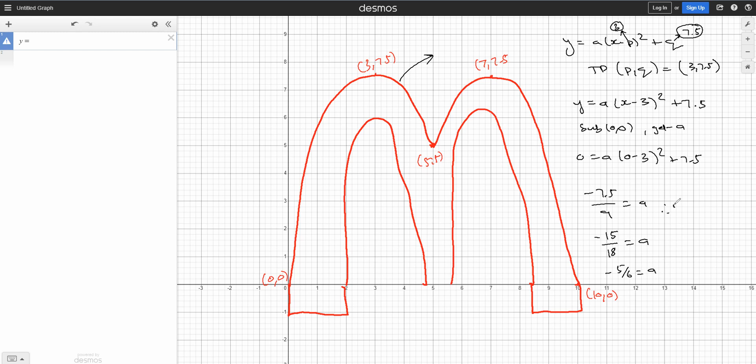So therefore, my equation will be y equals negative 5 over 6, x minus 3, and that's 15 over 2. So plus 15 over 2 or 7.5. Well, we could use decimals all the way through.